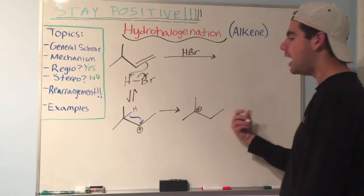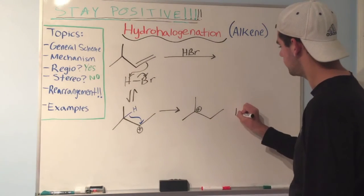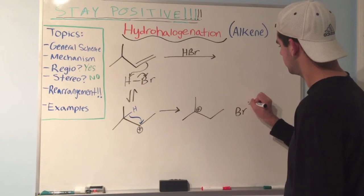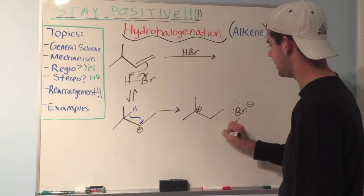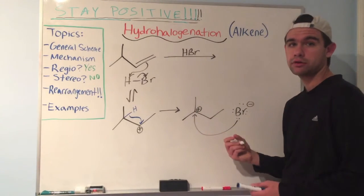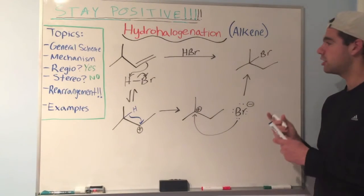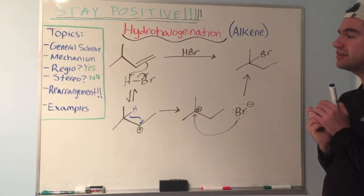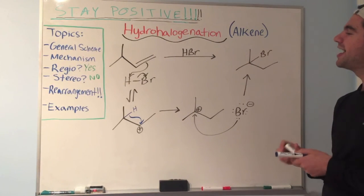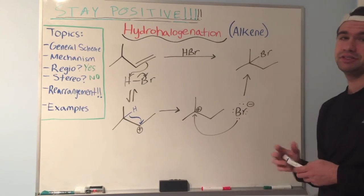So now we have the carbocation in a new position, this time tertiary, and now we're going to bring in our Br- for attack. Let's go into attack at the carbocation site, and now we can draw our product. So that's what our product would look like. Br is in the new position, remember that. And it still does follow Markovnikov's rule, and it still is not stereospecific.